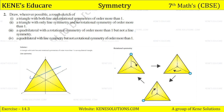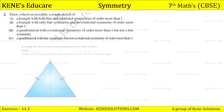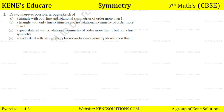You can see the line of symmetry and the rotational symmetry of an equilateral triangle. Next, a triangle with only line symmetry and no rotational symmetry of order more than one — this is an isosceles triangle. So students, an isosceles triangle has only line symmetry and no rotational symmetry of order more than one.